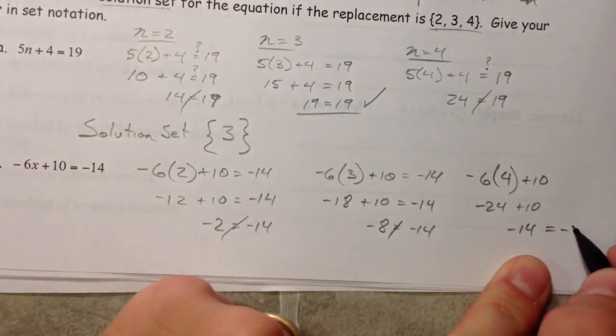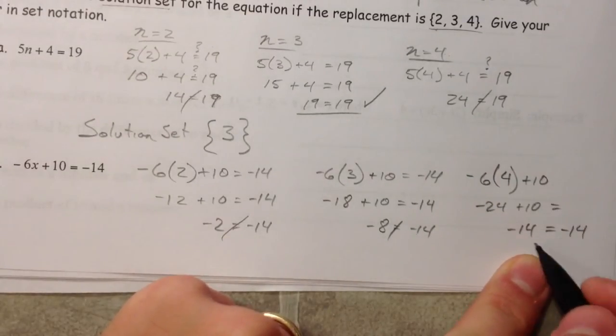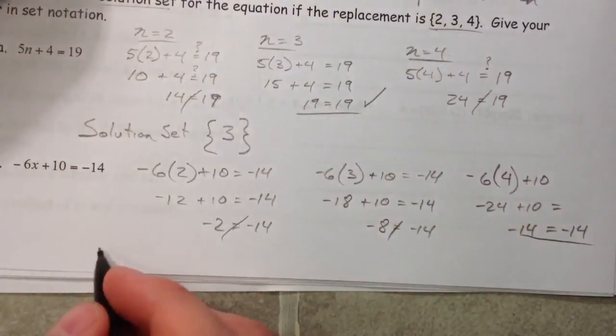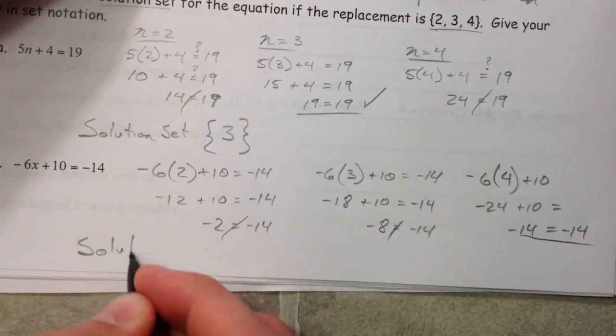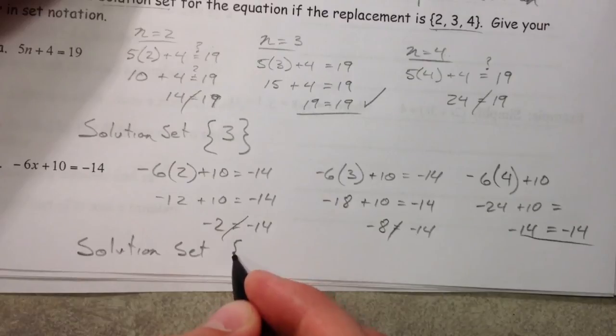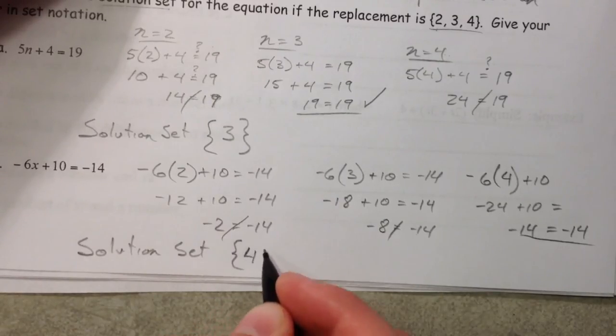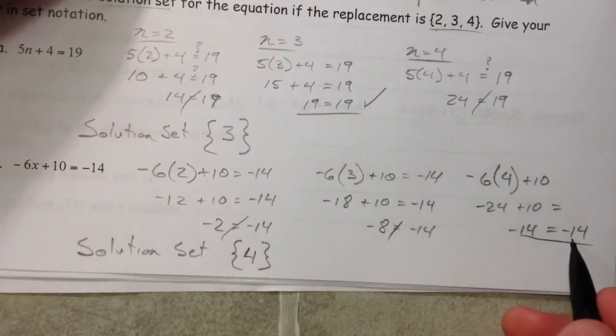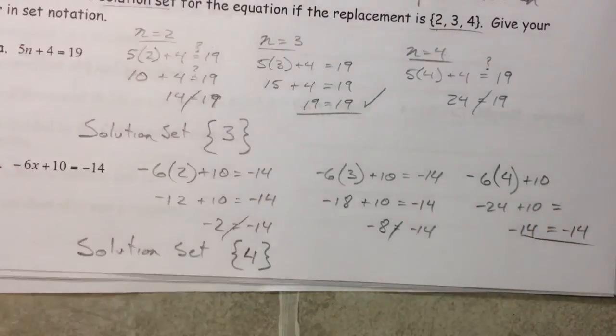So that's negative 24 plus 10 equals negative 14. And we have a winner. Ding ding ding, congratulations, we found it. So solution set, practice doing these little set guys again. And so what was our solution? 4. Remember that it's not negative 14. 4 is what we plugged in, and so 4 is the solution.